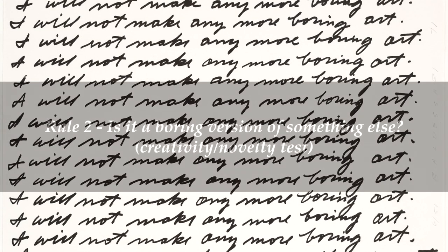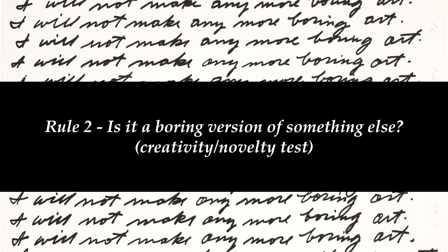Rule number two: is it a boring version of something else? This test alerts us to one of the key tenets of modernism — the holding up of novelty above all else. In the 20th and 21st centuries we see an explosion in the different forms being used in art. While the pinnacle of Victorian art was the oil painting, we now see collage, film, video, digital performance, experiential, and so many new forms being introduced.